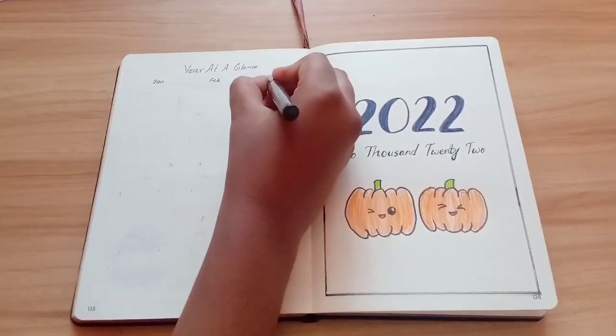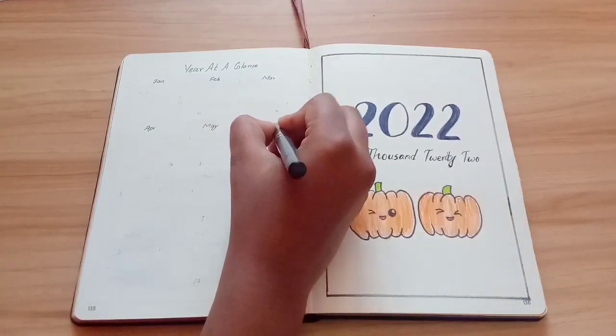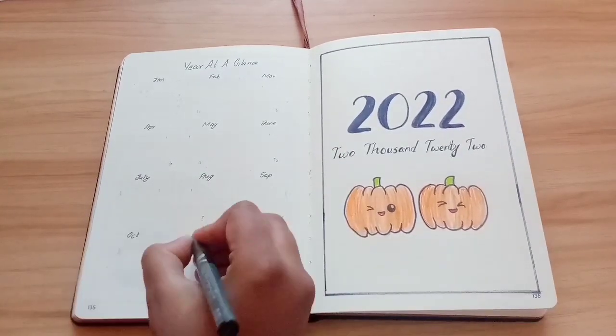On the left-hand side, I've added a year at a glance spread. It is quite self-explanatory - it is a space where you can write down the months, weeks, and days of the year.